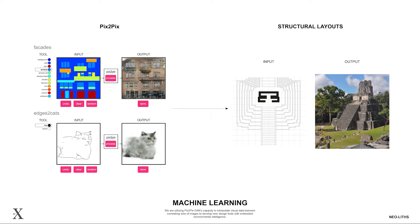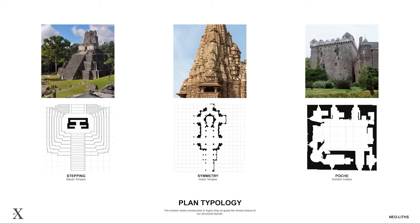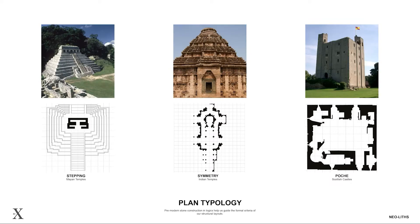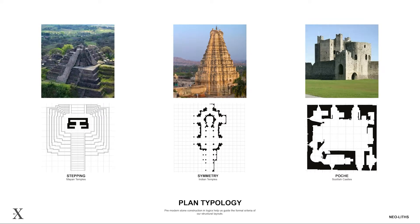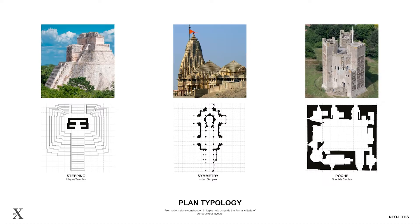Utilizing procedural dependency graphs, we produced our own datasets. We identified different characteristics in the structural layouts of ancient stone buildings, such as stepping, symmetry, and pochet, to inform our architectural systems.